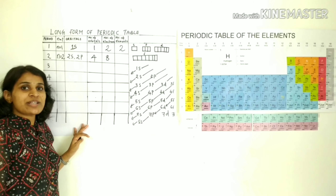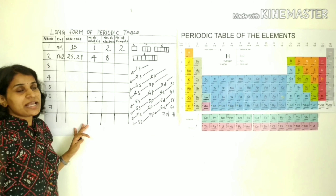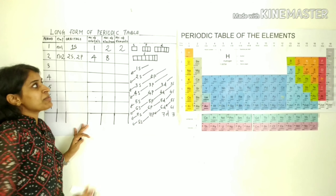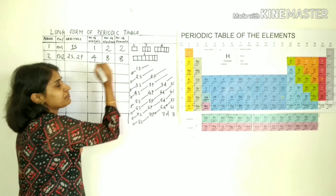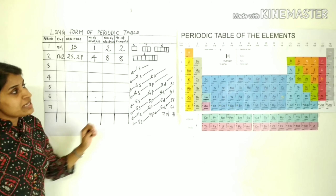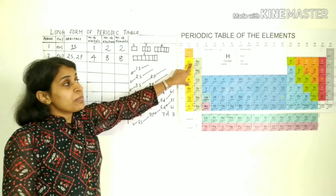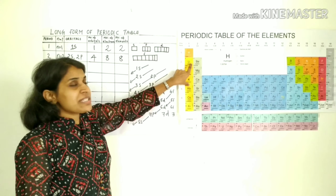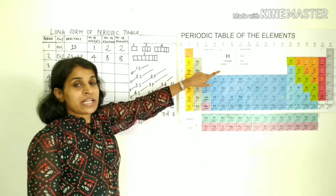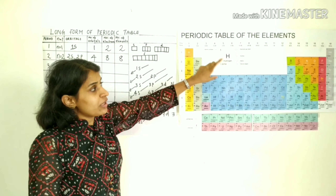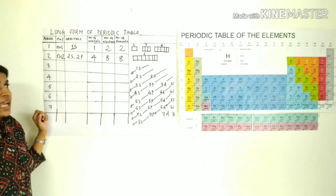The second period has 8 elements: lithium, beryllium, boron, carbon, nitrogen, oxygen, fluorine, and neon.